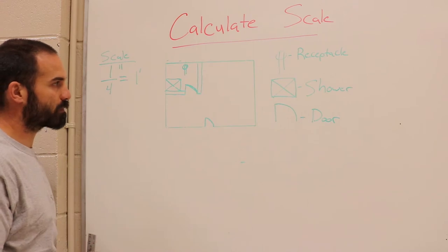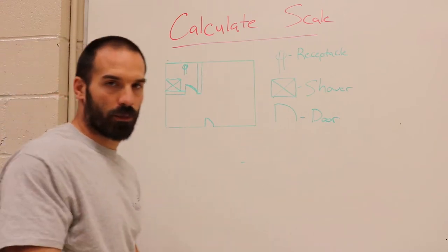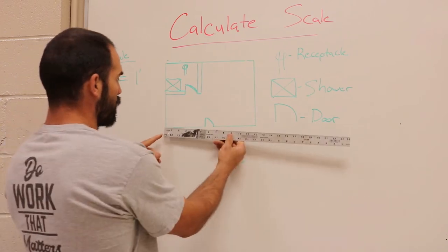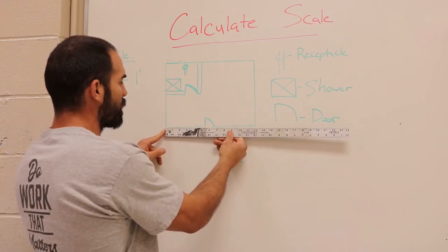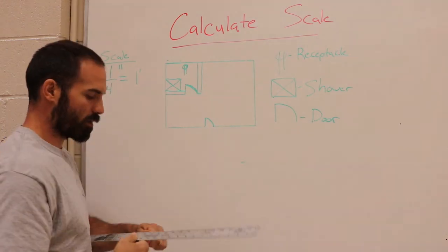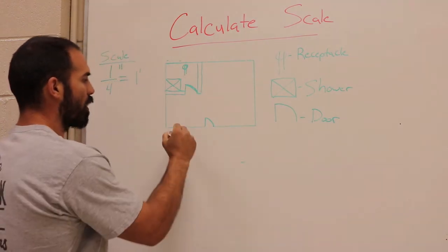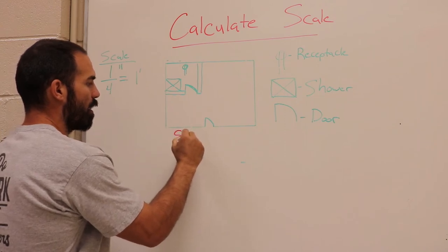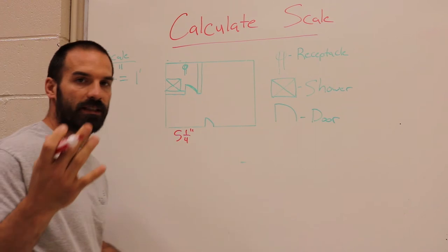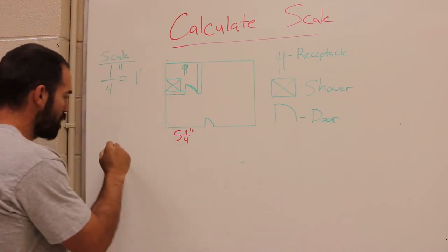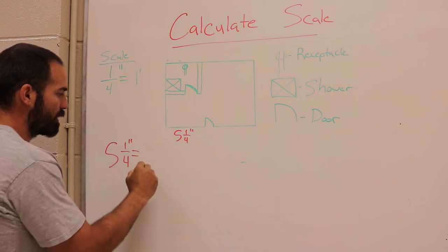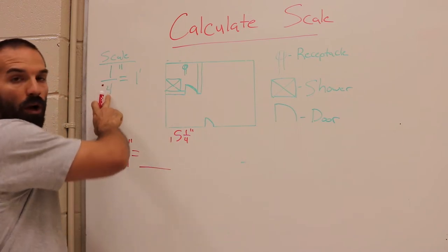Okay, so if I was a carpenter and I wanted to figure out where this door landed, I would take my ruler and I would measure from the corner of the building right here. And you probably can't see this, but that measurement is five and a quarter right there. So on paper that measurement is five and a quarter, but how far is it over in actual real life? So I'm going to write my measurement right here: 5 1/4 inches. What is that in feet?